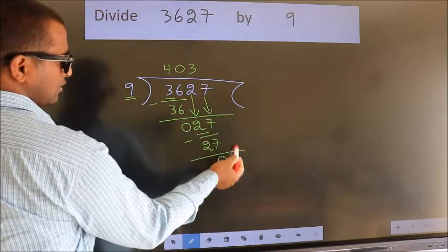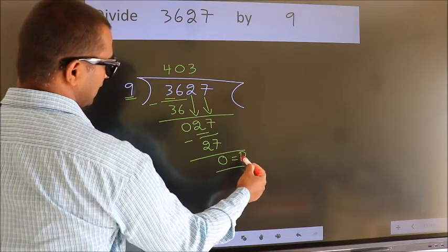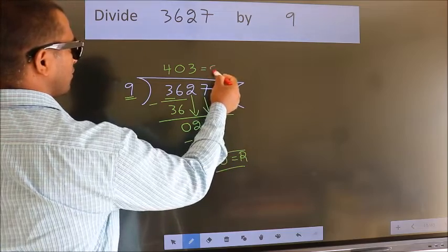No more numbers to bring down. So we stop here. This is our remainder. This is our quotient.